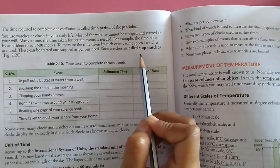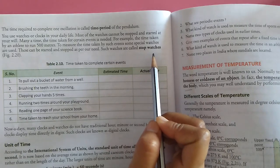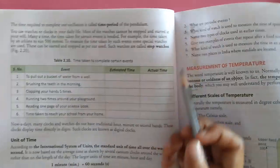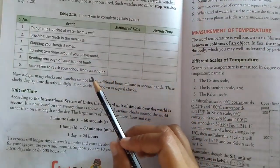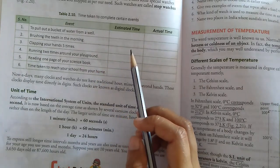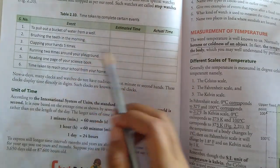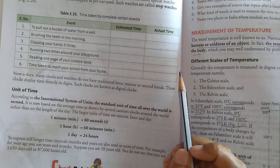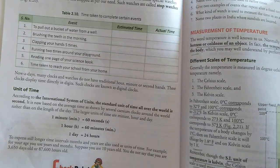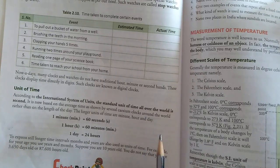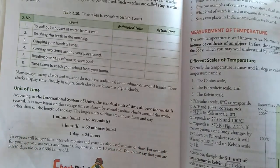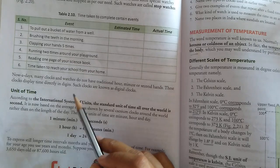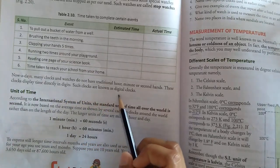Such watches are called stop watches. Nowadays, many clocks and watches do not have traditional hour, minute and second hands. These clocks display time directly in digits. Such clocks are called digital clocks.